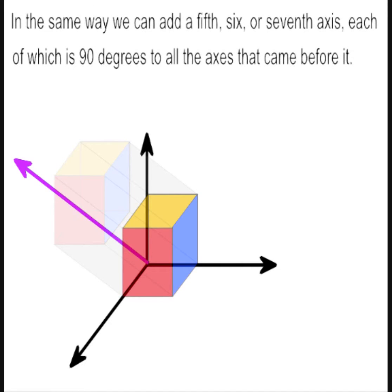In the same way, we can add a fifth, sixth, or seventh axis, each of which is 90 degrees to all the axes that came before it.